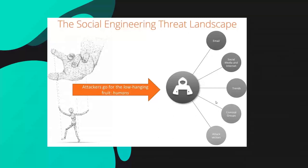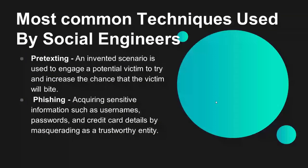The most common techniques used by social engineers. The first one is pretexting. Pretexting basically involves an invented scenario used to engage a potential victim, increasing the chances that the victim will bite. For example, if I know something about Janice who works front desk at the UPS store, I can use that to create a scenario — maybe I know she has a French bulldog — and use that information to send her an attachment she'll click on, giving me access to the system she's on. Pretexting is really laying the foundation for a second or third encounter with that person.